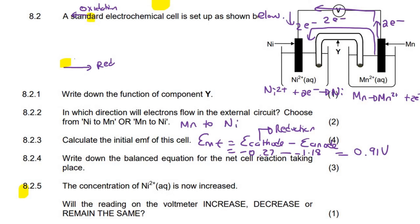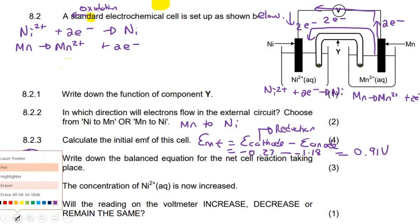This next question says, write down the balanced equation for the net cell reaction. Okay, easy. So we've already got this one and we've already got this one. I'm just going to write them underneath each other. And then here we've got Mn turning into Mn2+ plus two electrons. Okay. Now to balance them, we always want to make sure that these are the same. Luckily they are in this case.